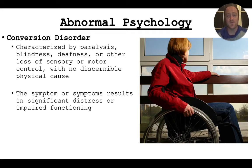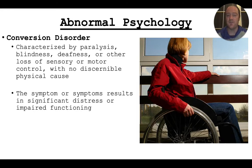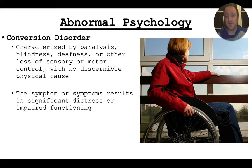Conversion disorder is really interesting. This is when someone has paralysis, blindness, or deafness — some type of really serious physical deficiency — with no physical cause as to why it's happening. So this would be someone who goes blind but they don't know why; their eyes are perfectly healthy, or they are paralyzed and there's no physical cause. Usually this is sometimes linked to trauma — not physical trauma, but more psychological trauma. And sometimes it goes away and sometimes it doesn't, and we don't know why. It's really interesting that our body can literally just shut something down because of a psychological thing.